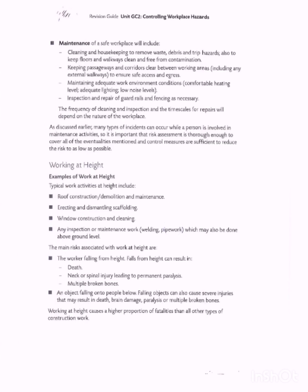We're also talking about maintenance. Maintenance of a safe workplace will include cleaning and housekeeping to remove waste, debris, and trip hazards, and to keep floors and walkways clean and free from contamination. When maintenance workers are working, they should always make sure their work area is clean. If they remove any items, they should not leave them haphazardly, as proper control measures are needed — someone might step on removed equipment, which may also become damaged and cause accidents. Passageways and corridors between working areas should also be kept clean.